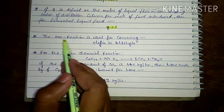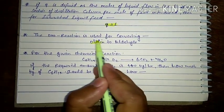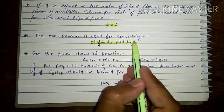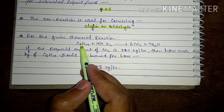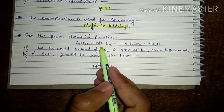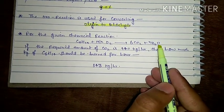Next question: The oxo reaction is used for converting olefin to aldehyde. For the given chemical reaction: C6H14 plus 19 upon 2 O2 gives 6CO2 plus 7H2O.